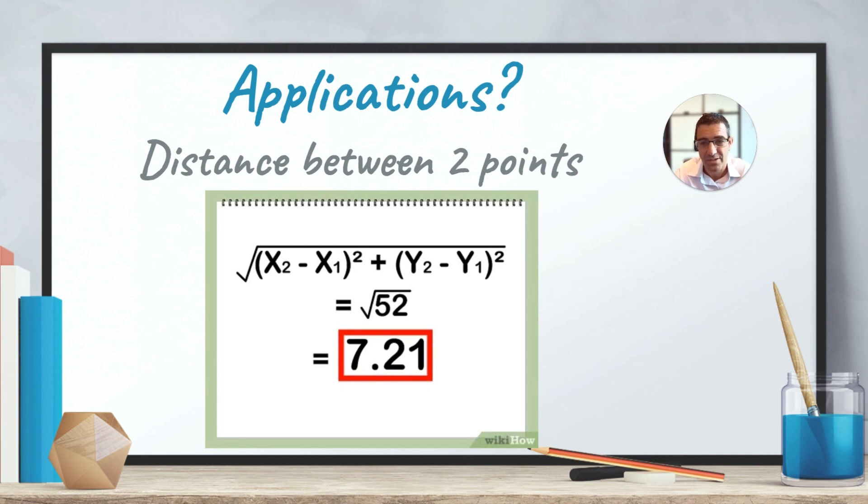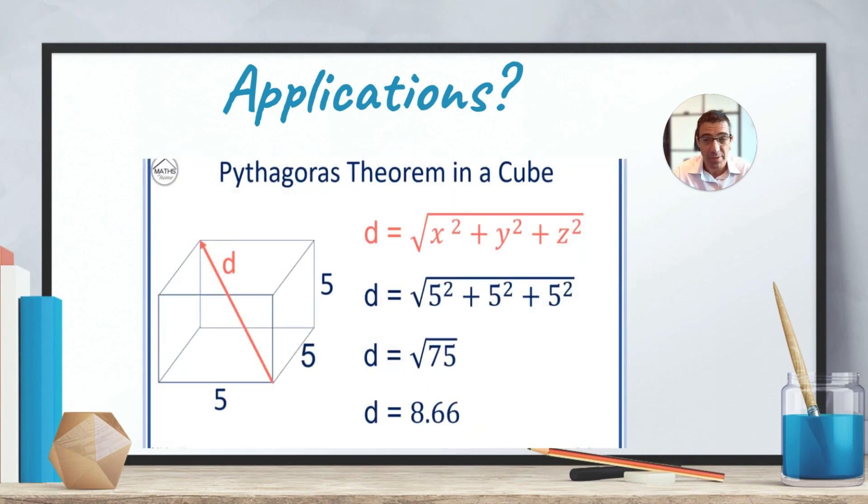So the wonderful thing about Pythagoras' theorem is you can extend it in 3D as well. So if you had a cube, for example, with length 5 and height 5 and depth 5, you could, technically speaking, do 5 squared plus 5 squared plus 5 squared, taking each length, squaring it, and then square rooting the result to find that the distance here from one point of the cube to the other diagonal is 8.66. So Pythagoras' theorem works in two dimensions, but it's so good and so powerful that it also works in three dimensions.